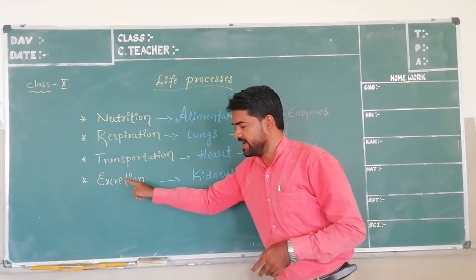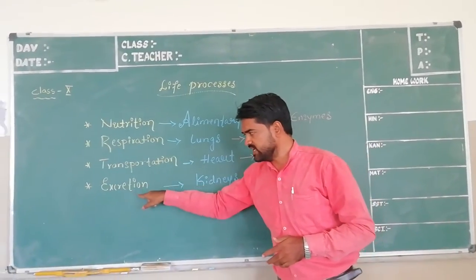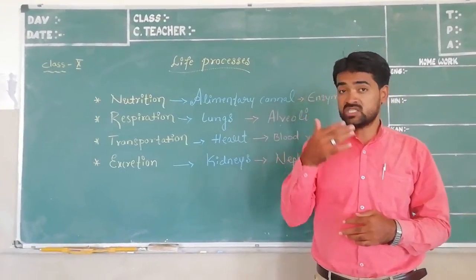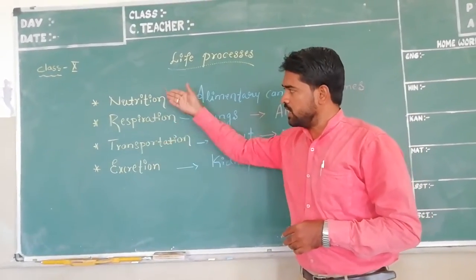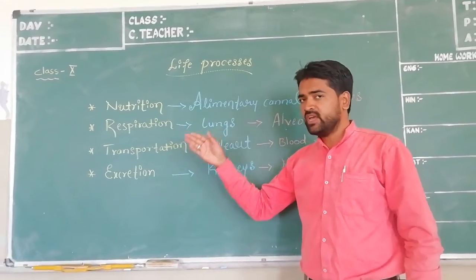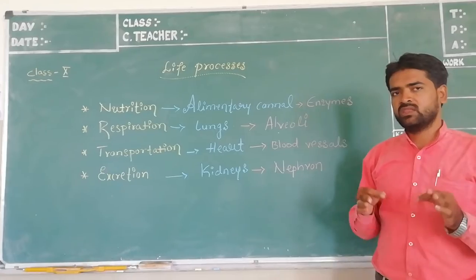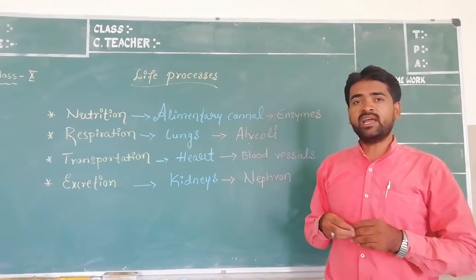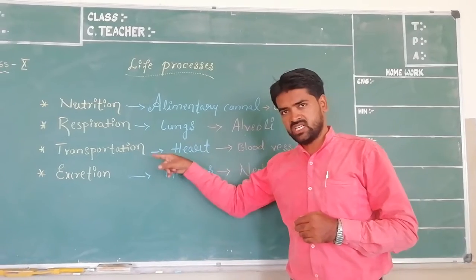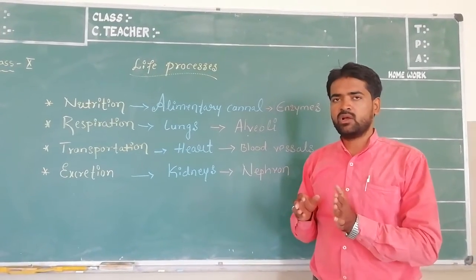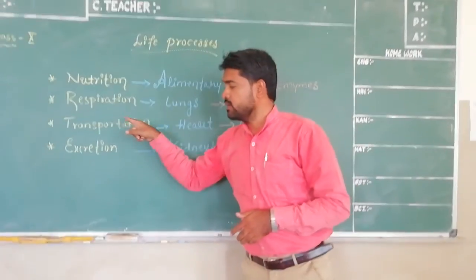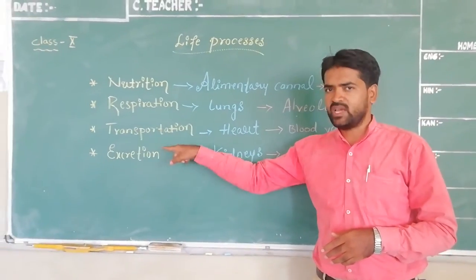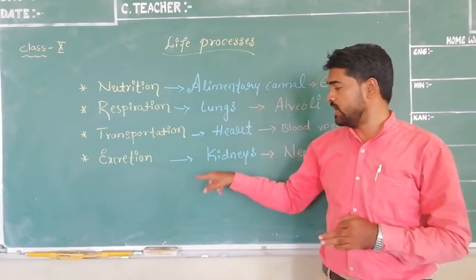The last process is excretion, which is very important. Excretion means the process of removal of waste items, substances, or toxic materials which are produced during the other life processes. The removal of waste materials is very necessary. If stored in the body it will be harmful, and if it accumulates it will definitely be poisonous — it will cause diseases or may even cause death. The removal of waste items is called the process of excretion, which takes place in the organs called kidneys.